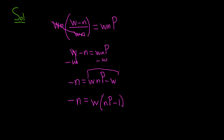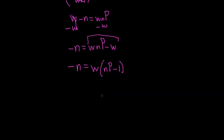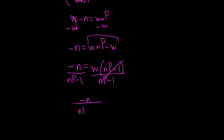We're almost there. W is being multiplied by this whole piece here, NP minus 1. So to find W, we'll do the opposite of multiplication, which is division. So divide by NP minus 1 on both sides — these go away. So you have negative N over NP minus 1, and that's equal to W.